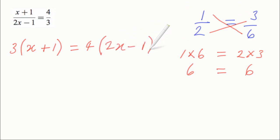Multiplying out the brackets, so 3 times x plus 3 is equal to 4 times 2x which is 8x, and 4 times minus 1 is minus 4.